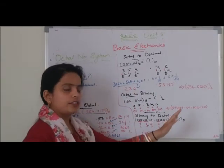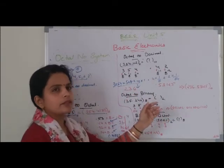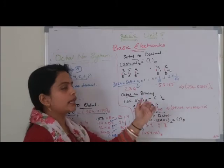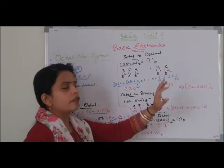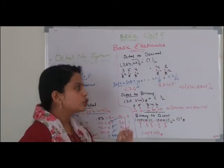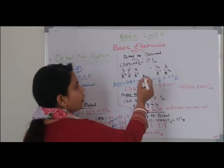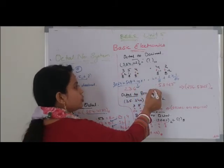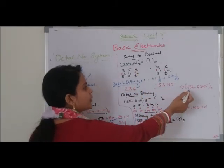Fraction part के लिए हम left से right की direction में जाएंगे और powers minus में increase होंगी: 8 to the power minus 1, 8 to the power minus 2, and so on। इनको हम solve कर लेंगे। अगर हमारे पास mixed number होता है तो हम इनको separately solve करेंगे।